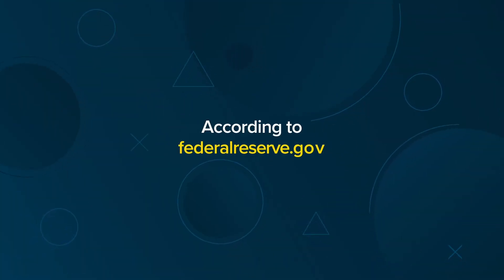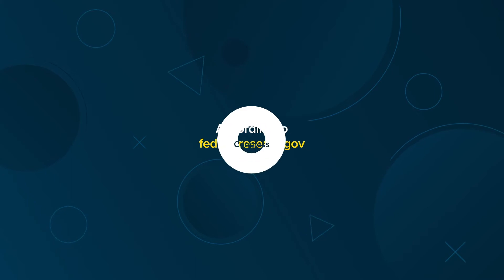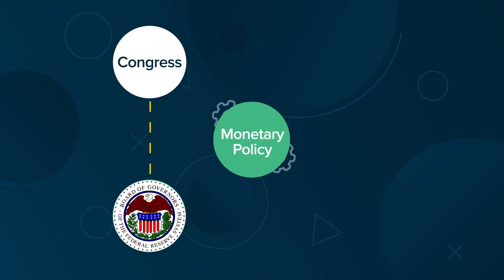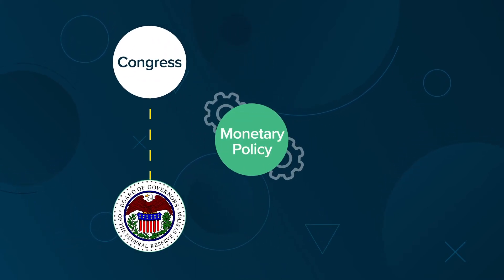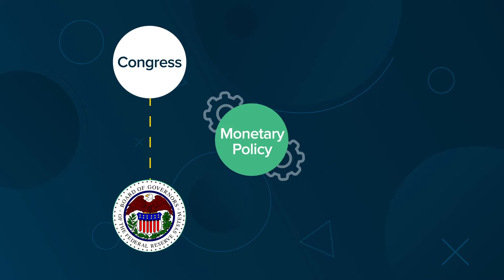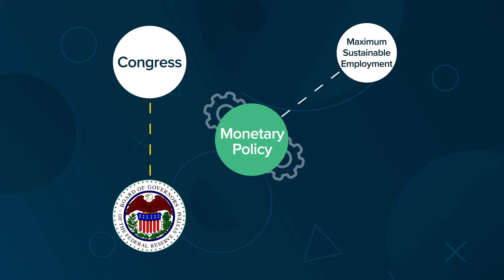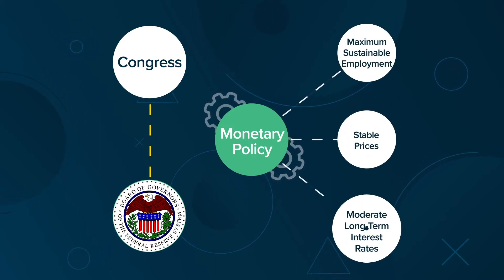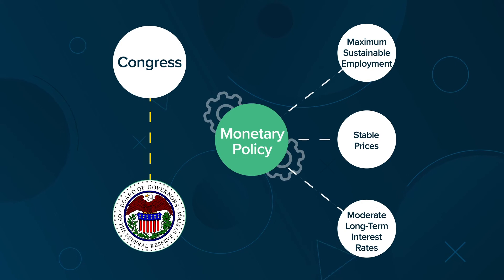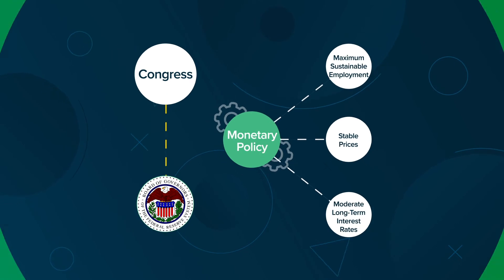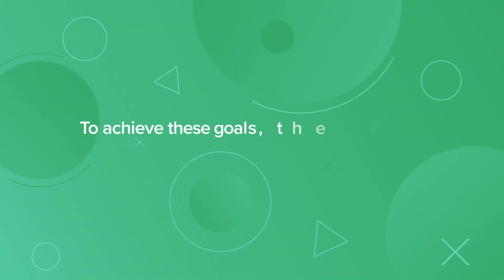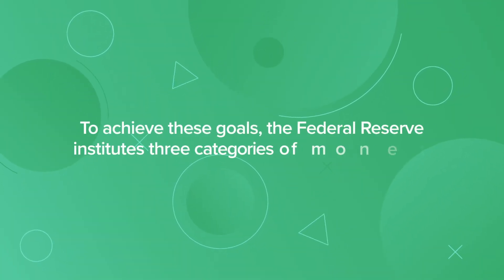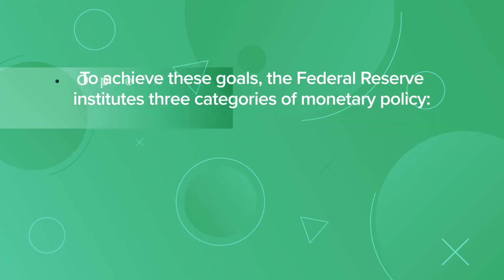According to FederalReserve.gov, Congress has directed the Fed to conduct the nation's monetary policy to support three specific goals: maximum sustainable employment, stable prices, and moderate long-term interest rates. To achieve these goals, the Federal Reserve institutes three categories of monetary policy.